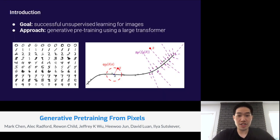The goal of our paper was successful unsupervised learning for images. Specifically, we want to learn features that are useful for downstream image classification tasks without the use of image labels during pre-training. Our approach is generative pre-training using a large transformer.